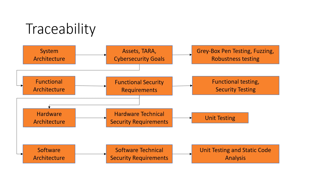The functional security requirements act as input for both the hardware architecture and the software architecture. The hardware architecture feeds into hardware technical security requirements, from which unit test cases are derived. For software, the software architecture defines software technical security requirements, and unit testing along with associated static code analysis must be traceable to the software technical security requirements.